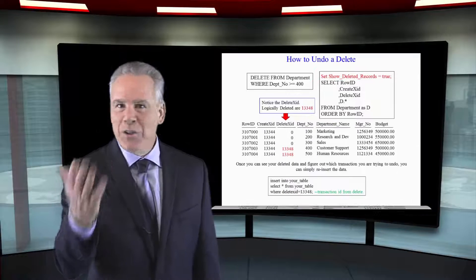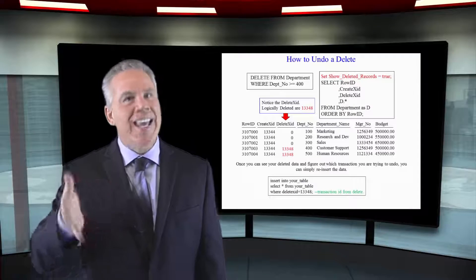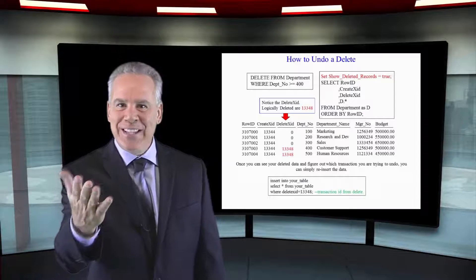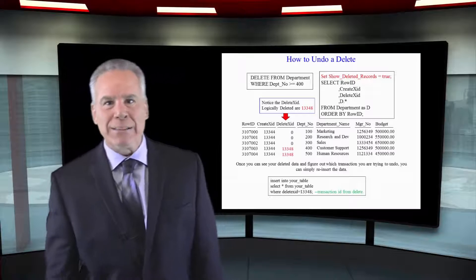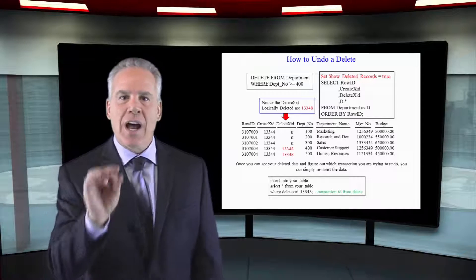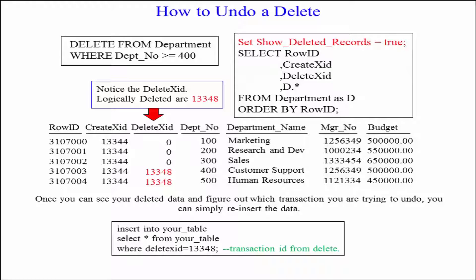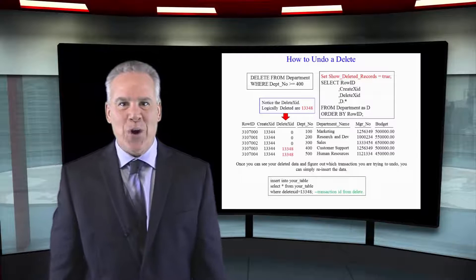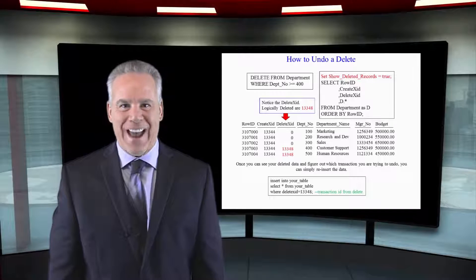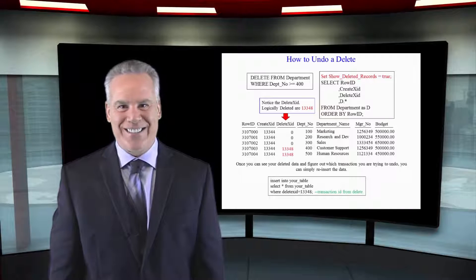You made a little mistake — it happens, even I've made them. And you said, oh no, I just deleted rows. I could get in a little trouble around here. I'm going to undo this delete. You just insert into the table, select everything where the delete XID is equal to the one you just deleted, and those rows are going to come back and no one's going to be the wiser.